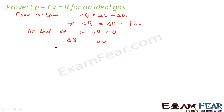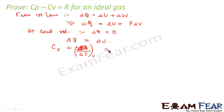From this we can write, at constant volume, the specific heat capacity Cv. Cv is nothing but delta Q by delta T at constant volume, because Cv is the specific heat capacity at constant volume — specific heat capacity is given by delta Q by delta T, and I have considered per unit mole as unity for now. So we can write Cv equals delta Q by delta T at constant volume. What is delta Q? It is nothing but delta U. So we can write Cv equals delta U by delta T.